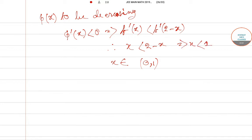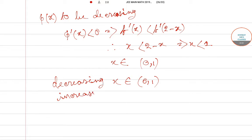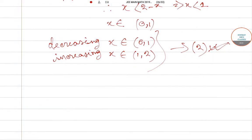So the answer is option 2, which is the correct option for this question. For decreasing, x belongs to (0, 1), and for increasing, x belongs to (1, 2). This is the correct answer, option 2.